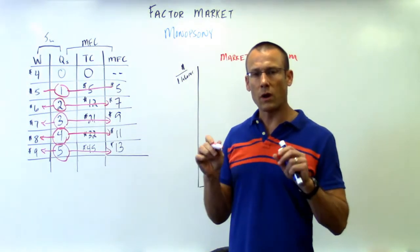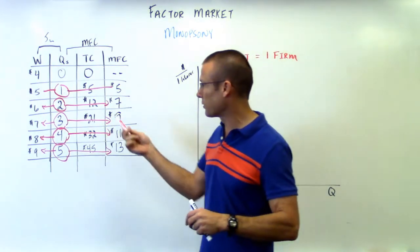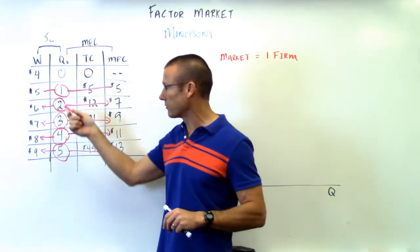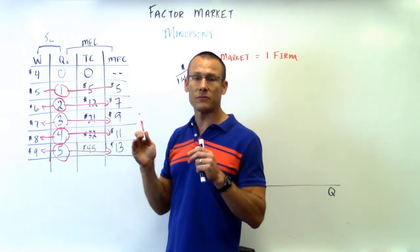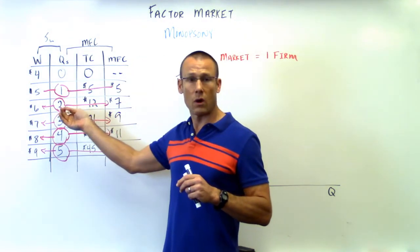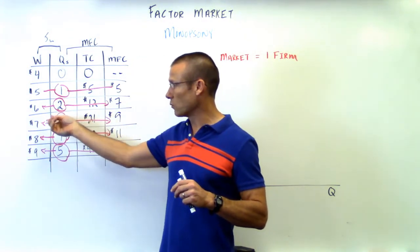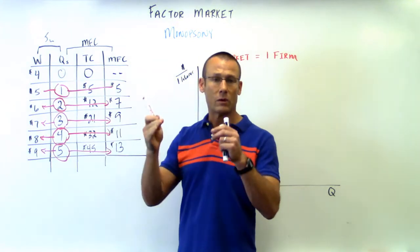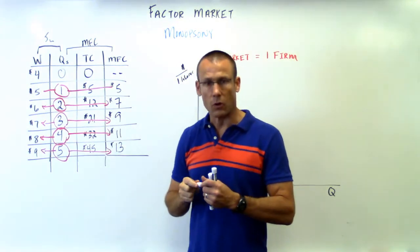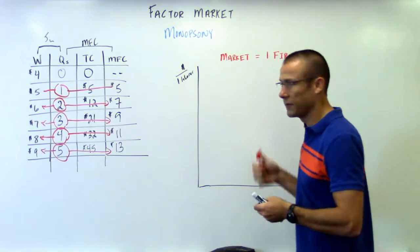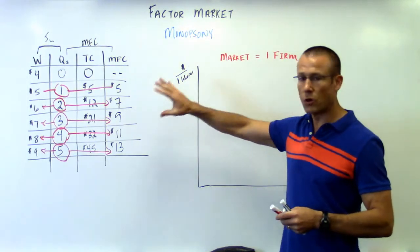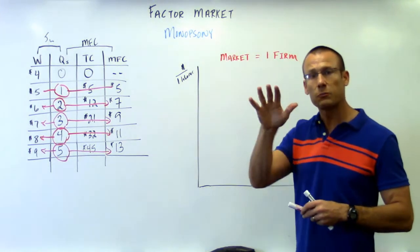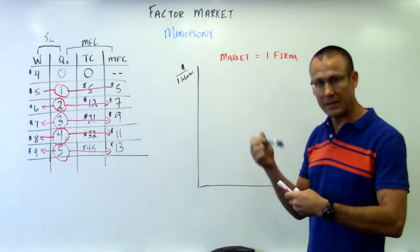The MFC is above the supply curve at every quantity after one. We've shown mathematically that if we have market power in the labor market — a monopsony — the MFC splits away from the supply curve. Let's put it on the graph: draw the supply of labor as upward sloping. In perfect competition, supply and MFC are the same line. But in a monopsony, MFC breaks away and lies above supply.